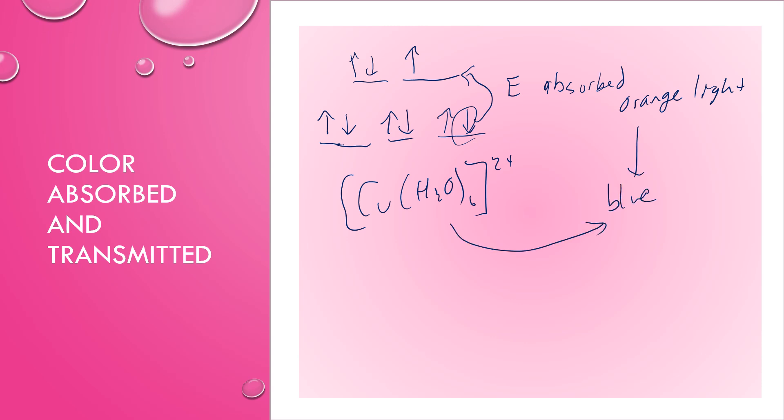Let's talk a little bit more about the color that's absorbed and transmitted. Let me draw that copper complex again. CuH2O6. If I have my split d sub-level like this, it takes a certain amount of energy to promote one of those electrons up to the higher energy half of that split d sub-level. That energy that is absorbed corresponds to a particular color of visible light. Let's say in this case it's absorbing orange light. And because it's absorbing orange light, the complementary color on your color wheel is blue. So complementary to orange is blue. And so our solution appears blue to our eyes.